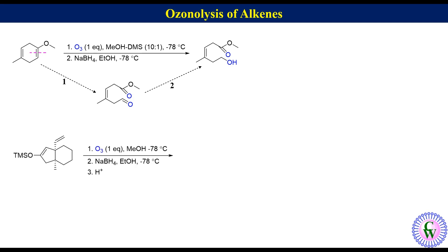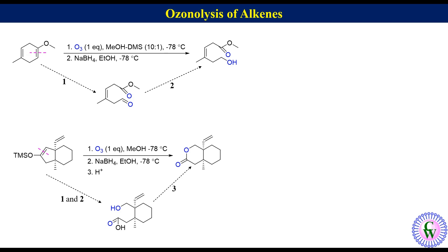Let's have one more example of a similar type. Here also there are two different alkenes. In this case, the alkene with the trimethylsilyloxy group will be more reactive. So after ozonolysis and reduction, it will give a hydroxy acid, which in the presence of acid will convert to the corresponding lactone.